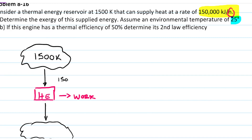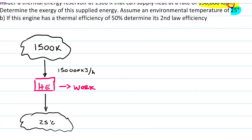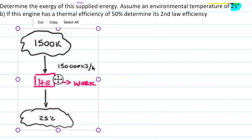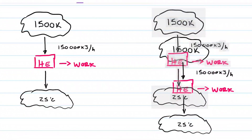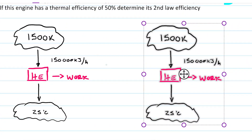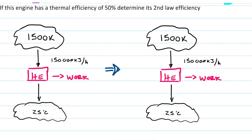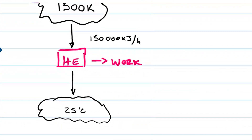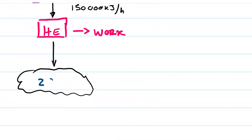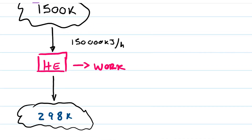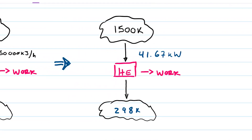So let's put down what we know: 150,000 kilojoules per hour and 25 degrees Celsius. We'll convert these to more appropriate units to avoid mistakes. 25 Celsius is 298 Kelvin. And 150,000 kilojoules per hour — dividing by 3600 — gives us 41.67 kilowatts. So kilojoules per hour converts to kilojoules per second, which is kilowatts.